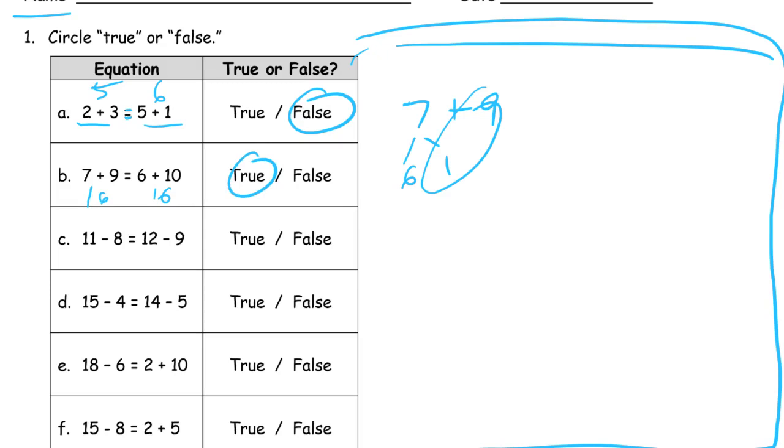Then we have 11-8 and 12-9. Now these are pretty close, we can count these up, right? 11-8 is 9, 10, 11. So that's 3 numbers. And 12-9, if we count from 9 up to the 12, that's 10, 11, 12, that's 3 numbers. So it's true.